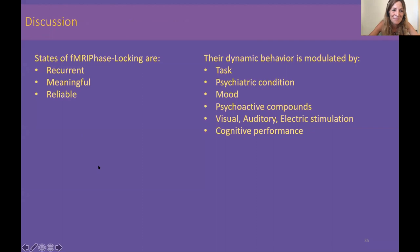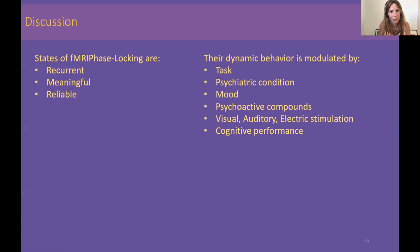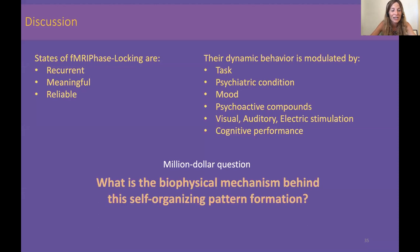Overall, across these works, the fMRI phase locking states are recurrent, meaningful, and reliable. Importantly, they can be modulated — the probability of occurrence changes with tasks, psychiatric condition, mood, psychoactive compounds, visual, auditory, or electric stimulation. To raise the so-called million dollar question for this theoretical conference: one of the key essential features to advance the field of neuroimaging is to understand the biophysical mechanisms behind this self-organizing pattern formation, which is probably linked to chimera states or synchronization phenomena in general.